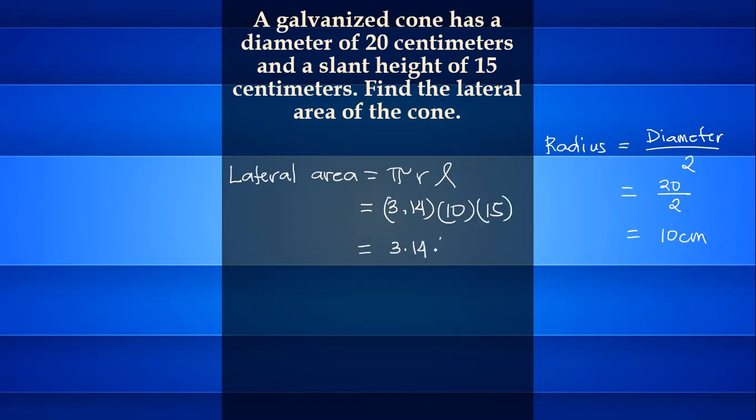10 times 15 equals 150. 150 times 3.14 equals 471 cm squared. This is the lateral area of the galvanized cone.